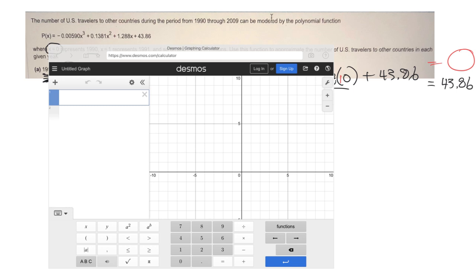Okay, I'm going to type in that function. I'll just call it y is equal to negative 0.00590x to the third plus 0.1381x squared plus 1.288x plus 43.86. There we go.